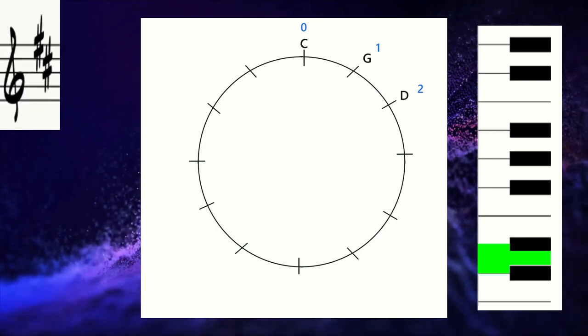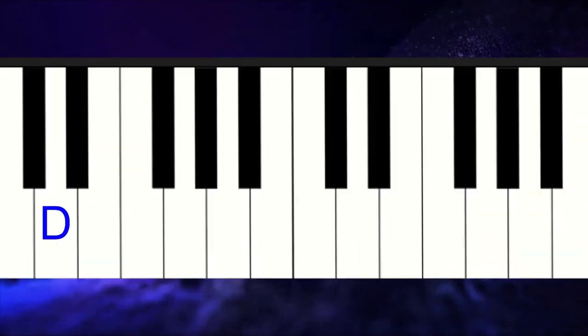All right, now it's your turn. So here we are in D and I want you to figure out where our next stop on the circle is going to be. I put a keyboard up here for you. Remember we're going to go up a perfect fifth which is seven half steps. I'll leave this up for a minute or you can pause the video and figure it out.